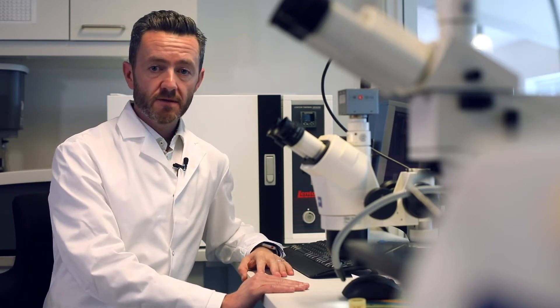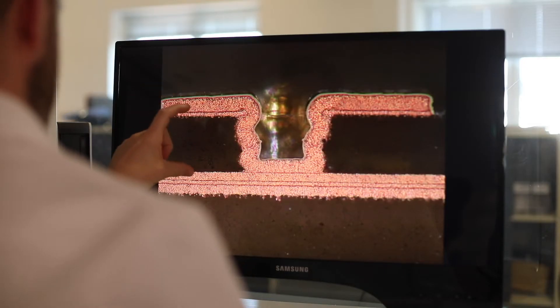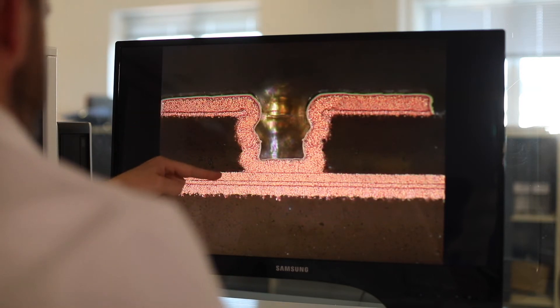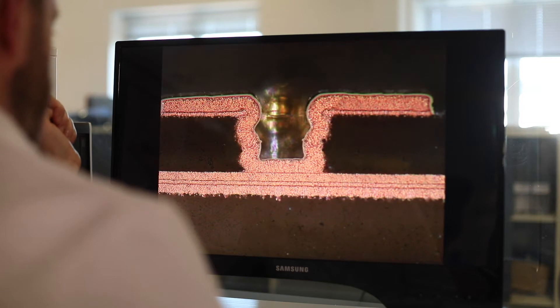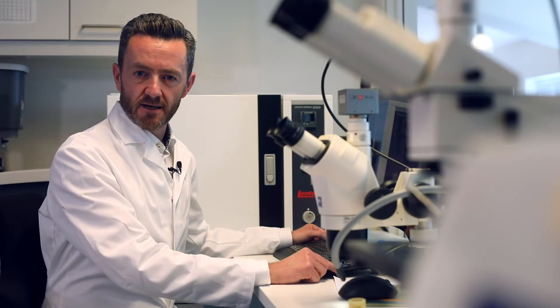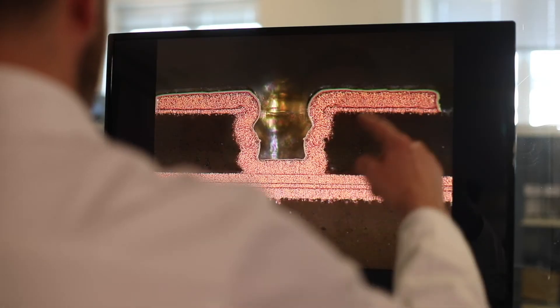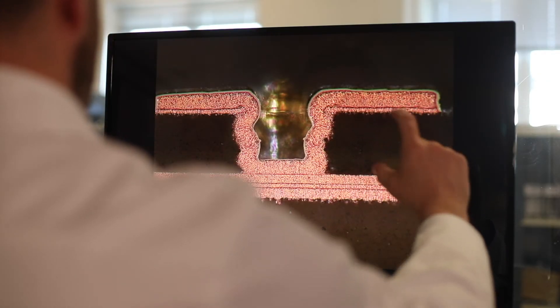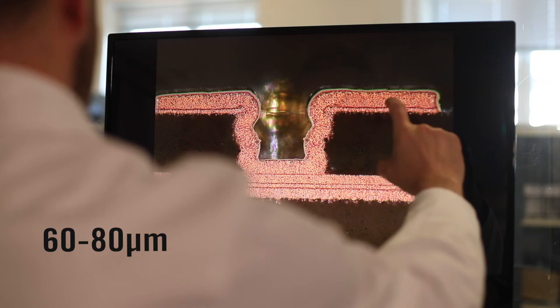In the case of microvia boards, we're most likely to see the depth be the dielectric thickness or the distance between layer one and layer two, for example. When we consider our design guidelines, typically we see this layer one to layer two dielectric thickness, or the depth, being 60 to 80 microns.